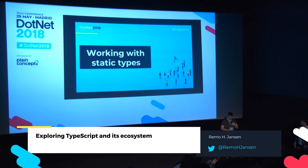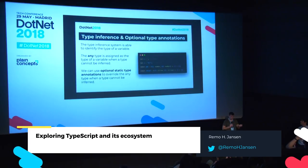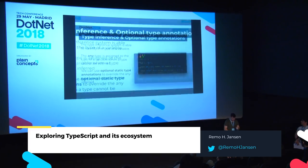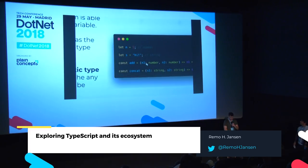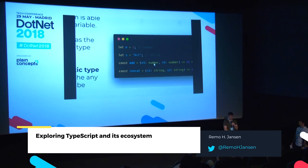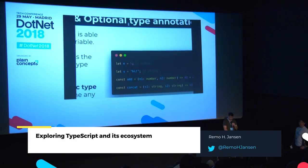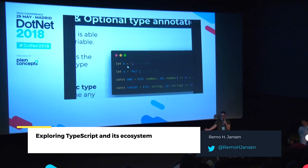The simplest TypeScript type system features are type inference and type annotations. A type annotation is what I showed earlier: you put a colon followed by the type name. Type inference is when you declare a variable like `n = 5` — TypeScript is smart enough to understand that 5 is a number, so `n` must be a number. That's type inference.